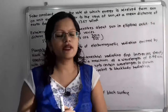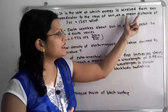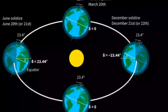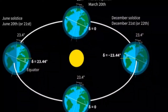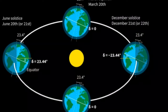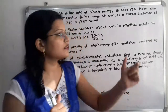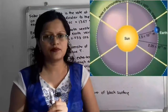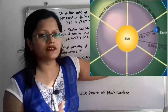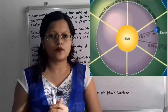What is the meaning of mean distance? We know that the earth is moving around the sun in an elliptical path, which is why the sun-to-earth distance is constantly varying. So we have to consider the mean distance, and that is why the term mean distance is important here.